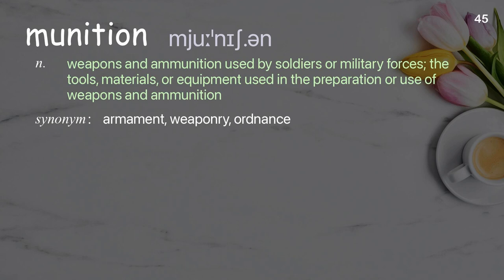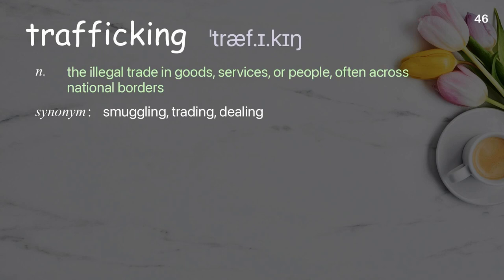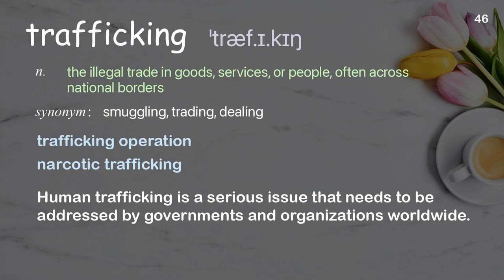Munition: weapons and ammunition used by soldiers or military forces; the tools, materials, or equipment used in preparation. Trafficking: to cross national borders with weapons and ammunition using trained fighters. Examples: trafficking operation; narcotic trafficking. Human trafficking is a serious issue that needs to be addressed by governments and organizations worldwide.